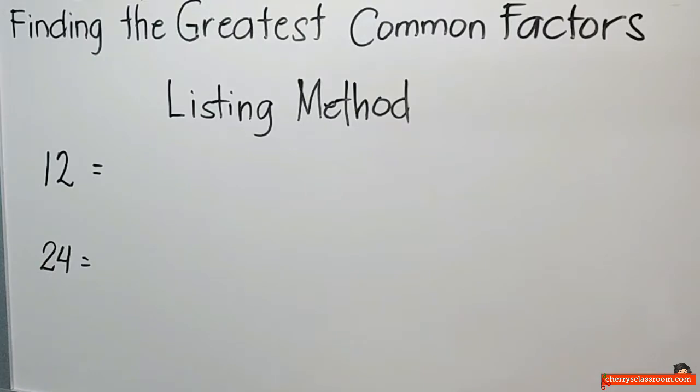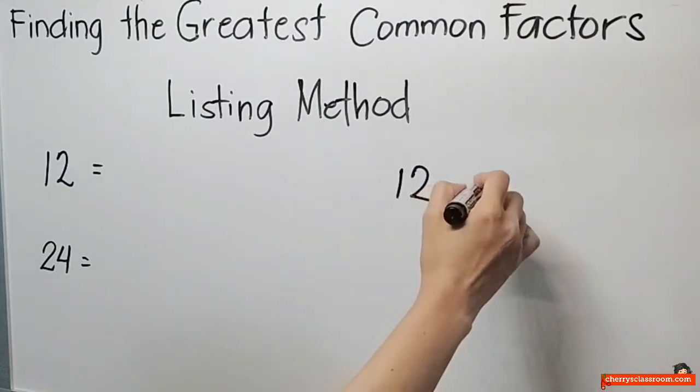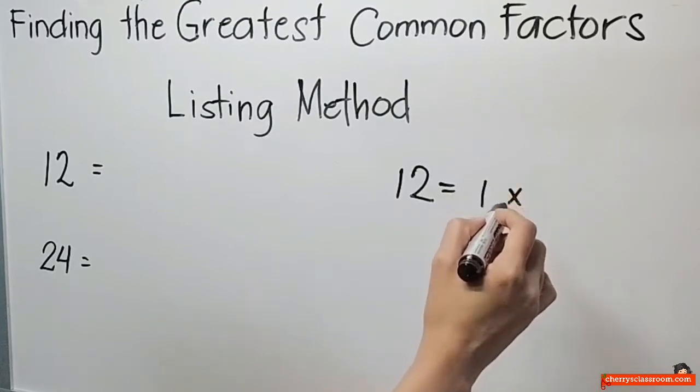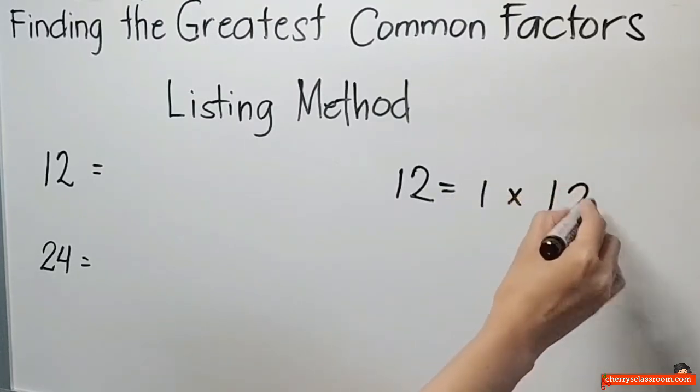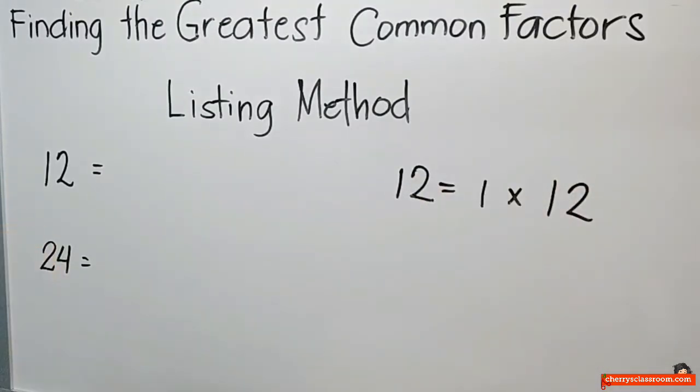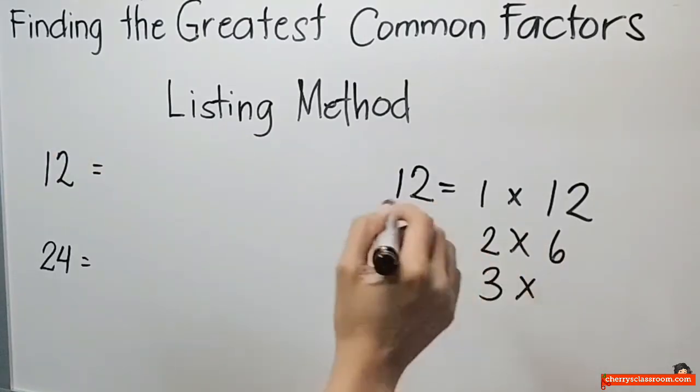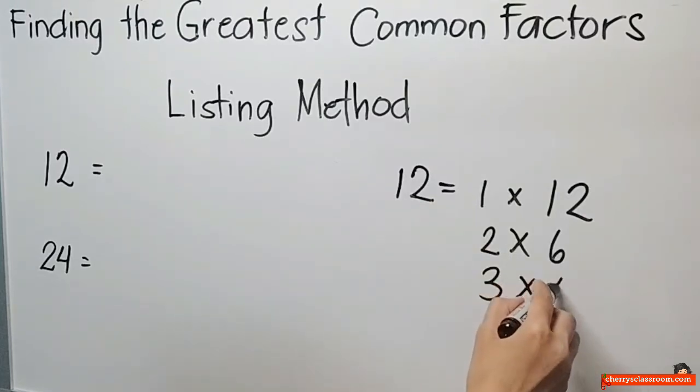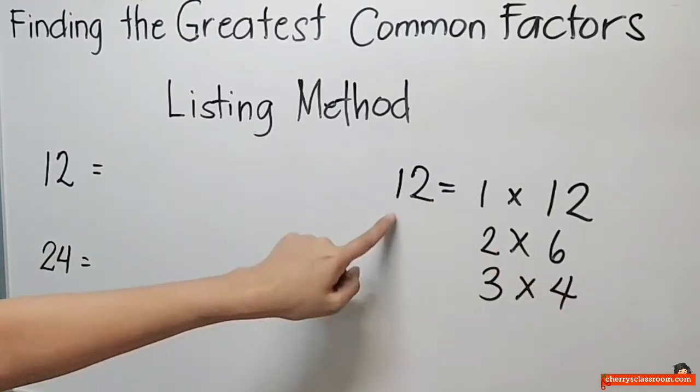Ano-ano yung mga numbers na yun? Let's say 12. Naggamit ako ngayon ng multiplication kasi ang multiplication ay kabaliktara ng division. So 12, i-multiply mo sa sarili niya, exactong 12 ang sagot. Pagkatapos, pwede ba ang 2? Oo. Kapag minultiply mo ang 2 sa 6, ang sagot ay 12. Pwede rin 3. Kasi ang 3, pag minultiply mo sa 4, ang sagot din ay 12.